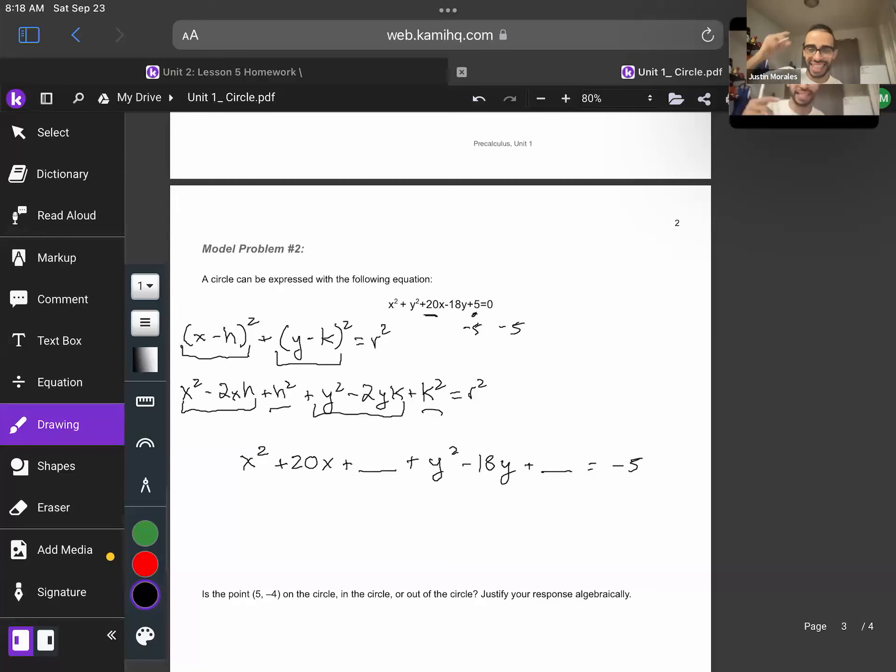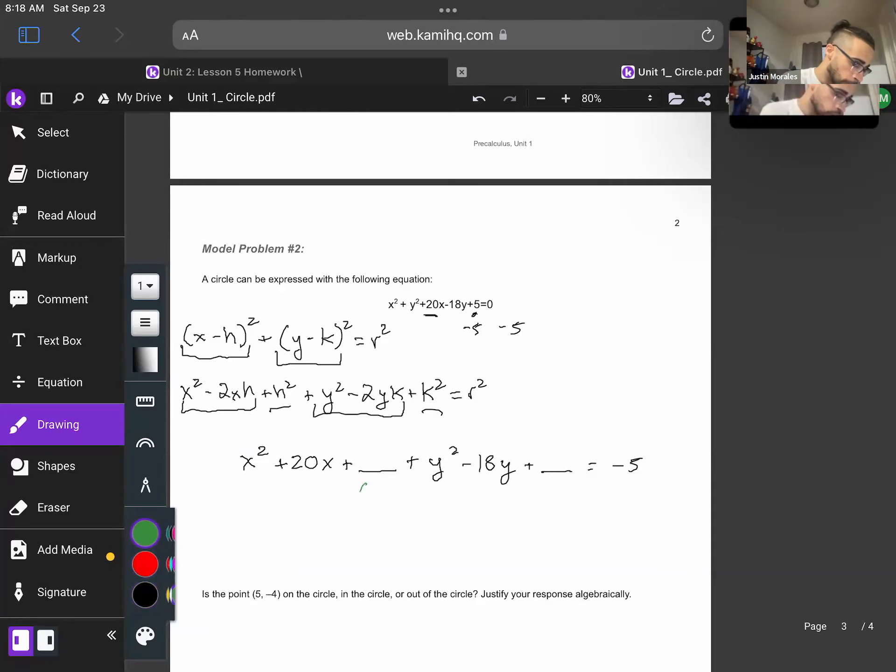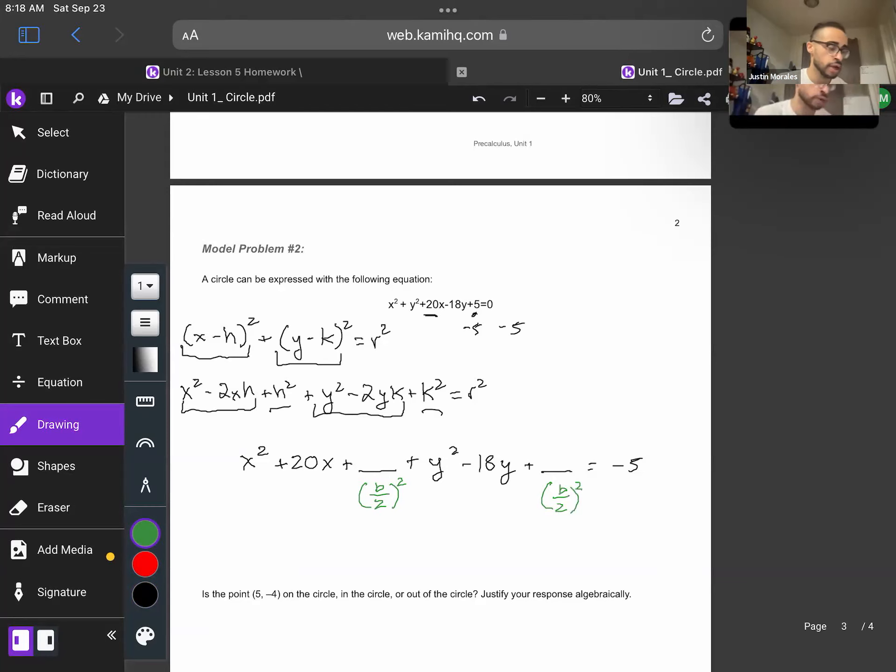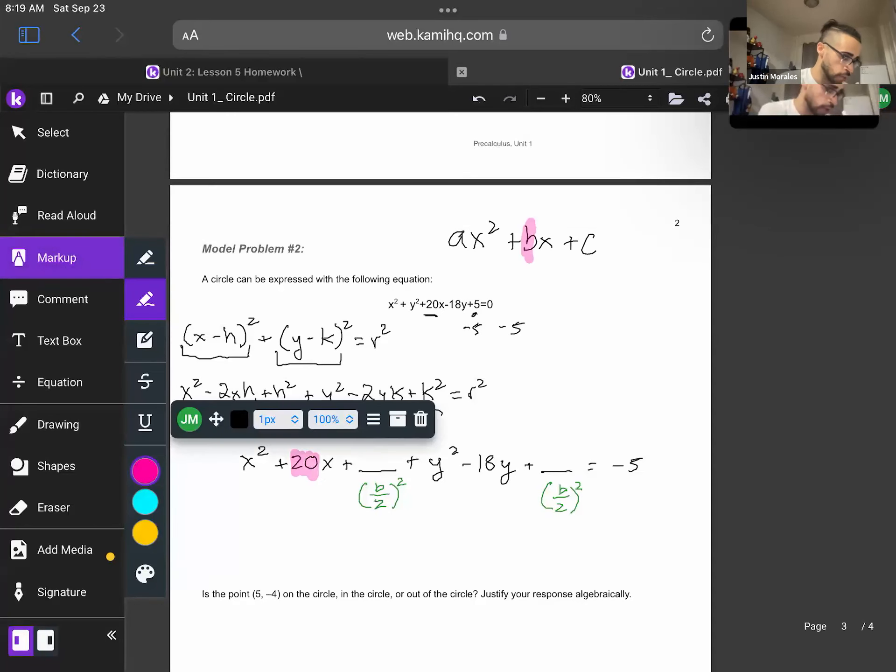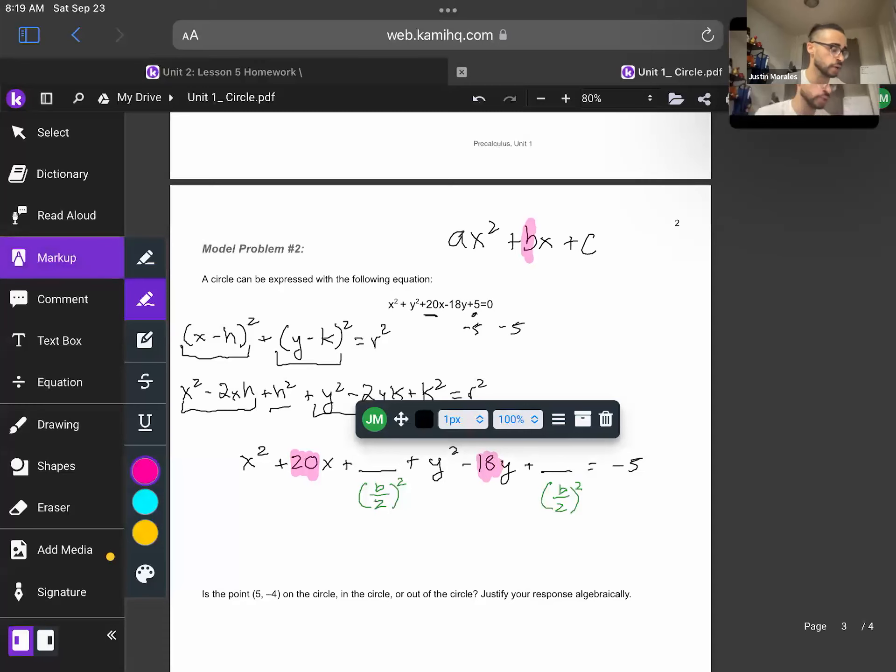So the reason why I like to put those blanks, because I like to force my brain to think. Because once you see a blank, you go, okay, I need to put something in that blank. So how do we figure out what goes into that blank? We're going to utilize b divided by 2 squared. And remembering the general formula, ax² + bx + c. So this b value is what we're going to look for. And that b value can be located right here and right here. So first, we're going to do 20 divided by 2, which is 10. 10 squared, which is 100.